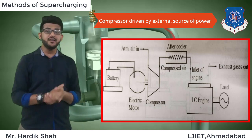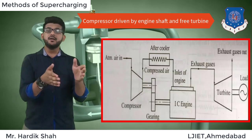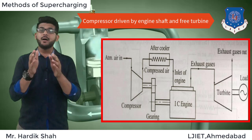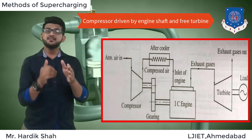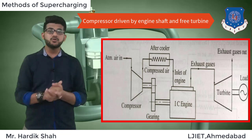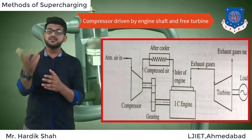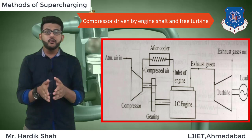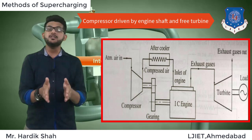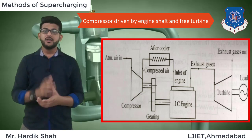The fourth method is a compressor driven by the engine shaft and a free turbine. In this arrangement, the power produced by the engine is utilized only to run the compressor, as shown in the figure. The exhaust gas coming from the engine is utilized to run the turbine, and the power produced by the turbine is used for an external load. This arrangement is also known as generator-type supercharging.